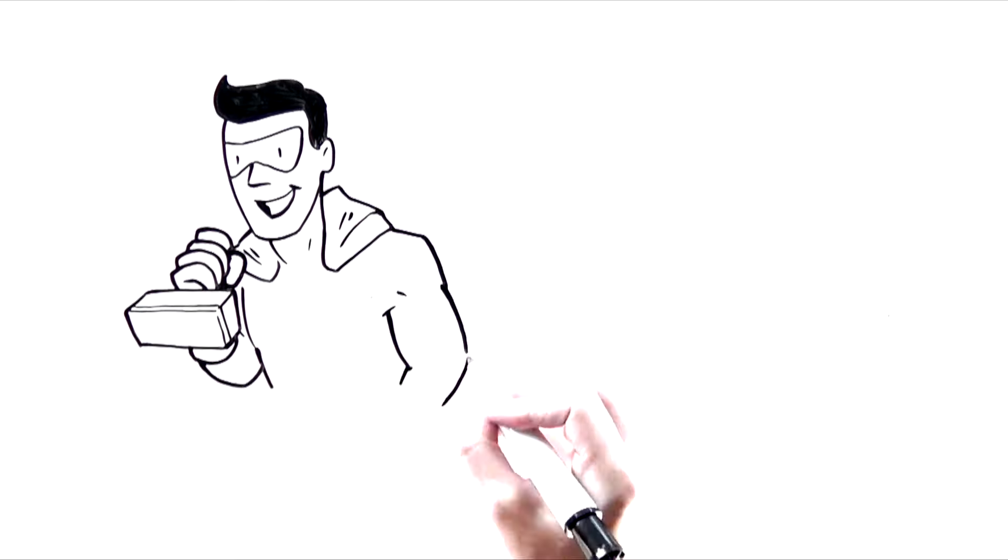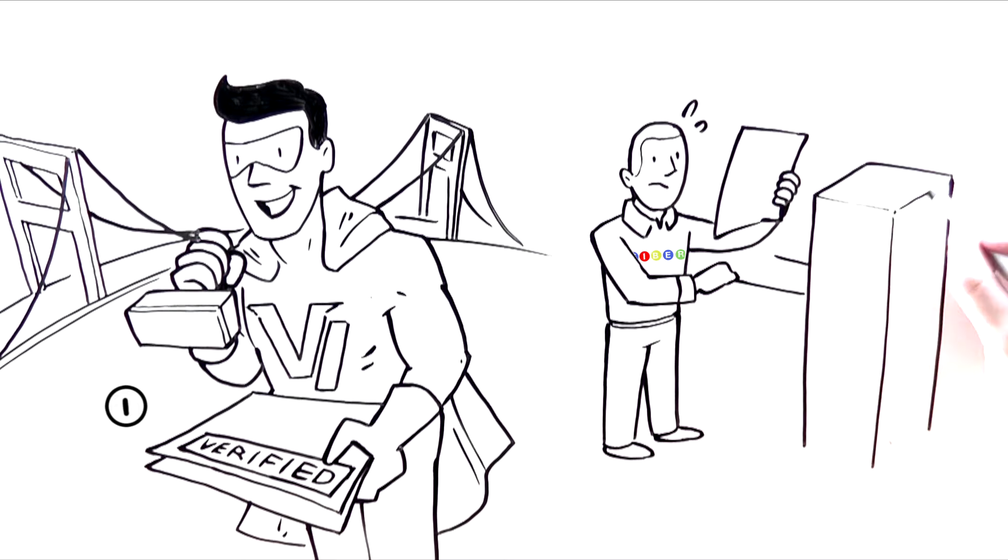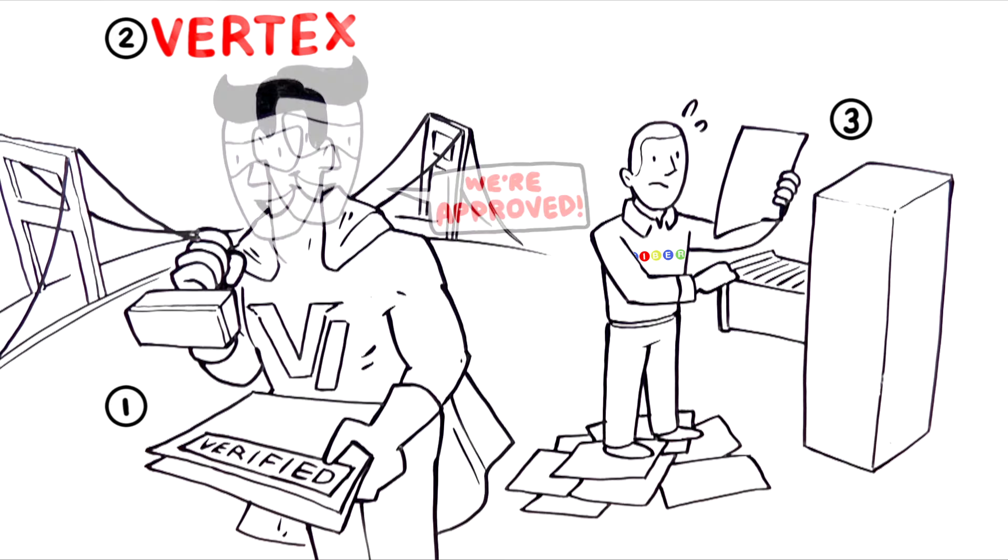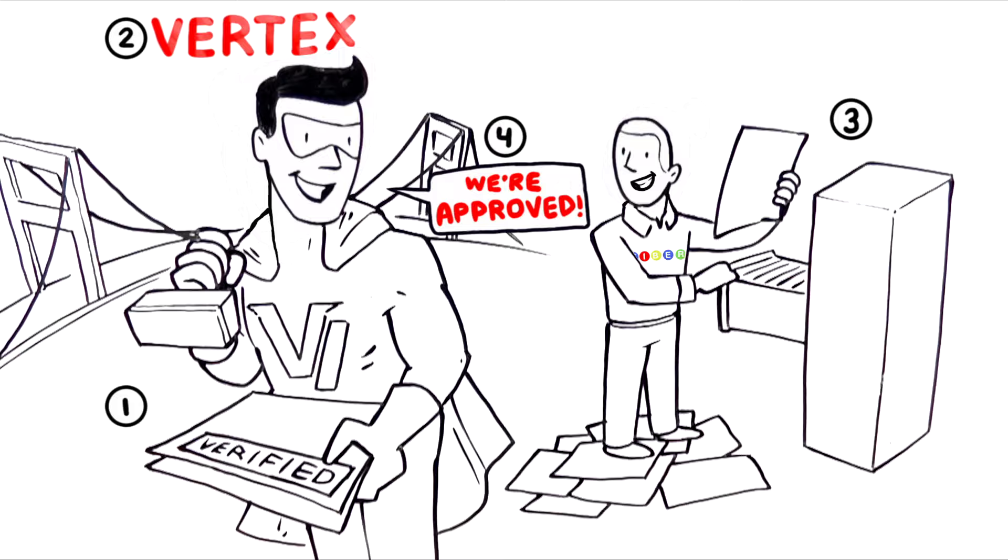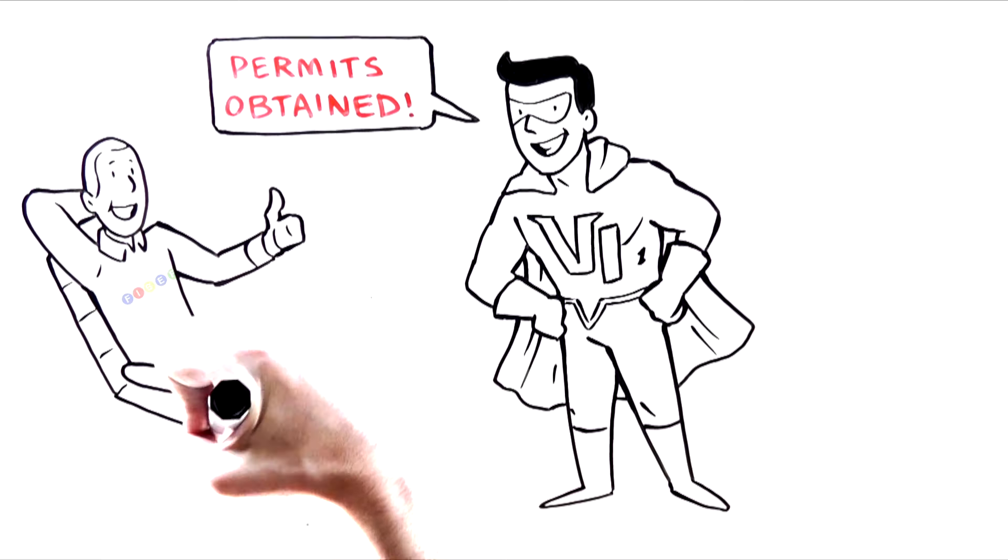Before construction can begin, all permits are verified and approved. This process can be especially painful if not managed by Vertex. Municipality permit offices do not have the capacity necessary to deliver efficient and sometimes not even accurate documentation. Vertex will confirm that all permits are obtained without any hassle to the fiber provider.